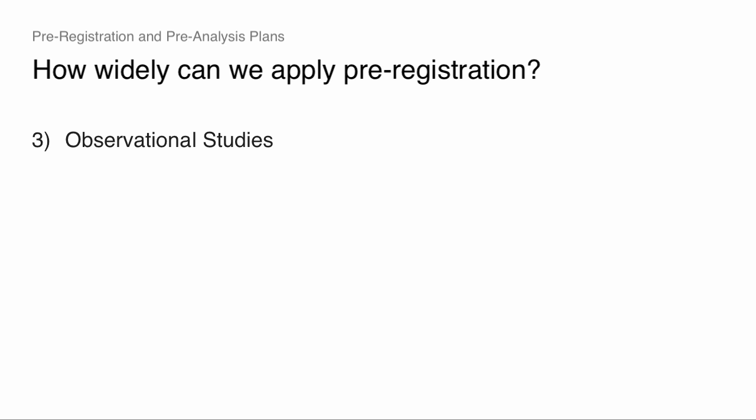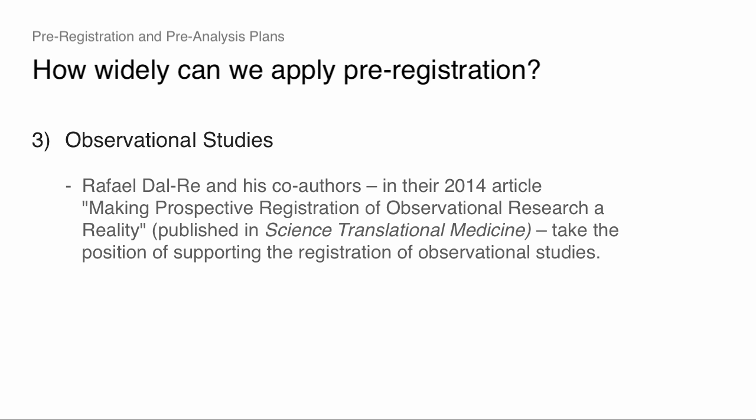Registering observational studies — let's talk about Dal Ray et al. They have a much more provocative position on registration of research. The starting point is: we know we can register medical trials, we've been doing that for a long time. We know we can do field trials — there are hundreds of these getting registered. We think it's pretty straightforward to register lab experiments, and it's also fairly straightforward to register a prospective non-experimental study. But what about the non-experimental observational stuff that may not be prospective? What do we do with that work? How can we bring transparency practices into that realm?